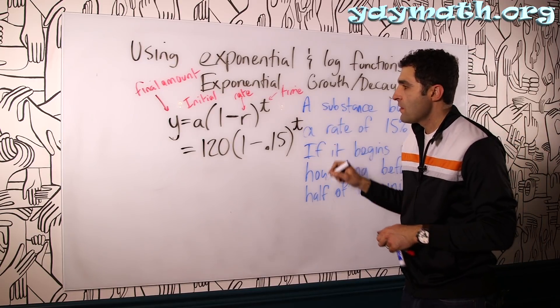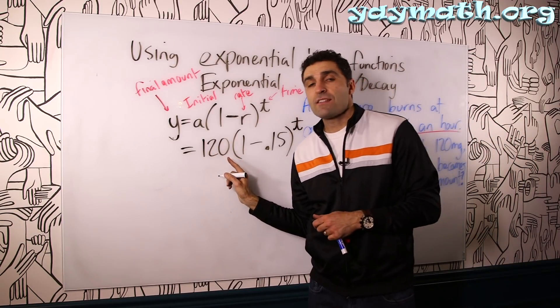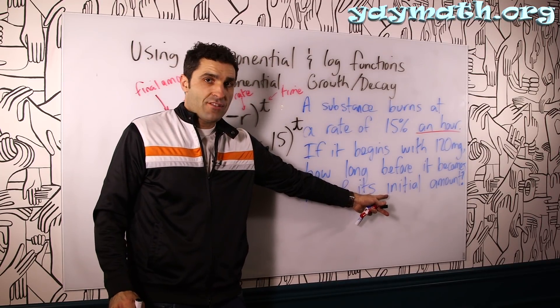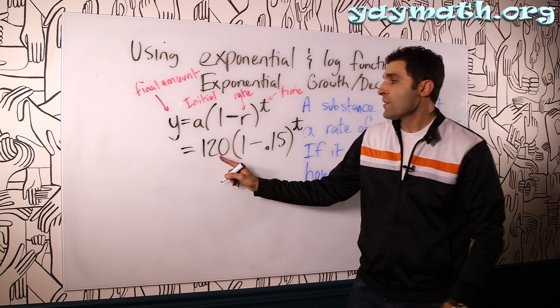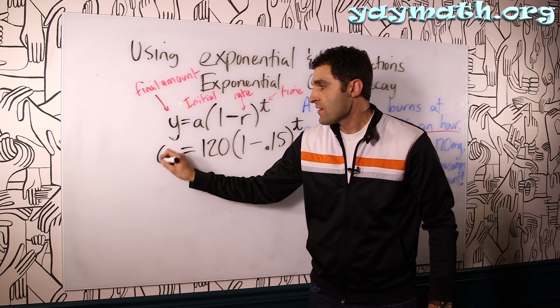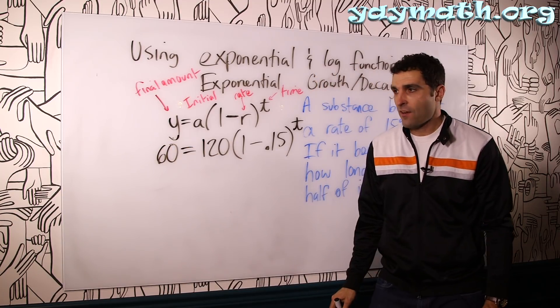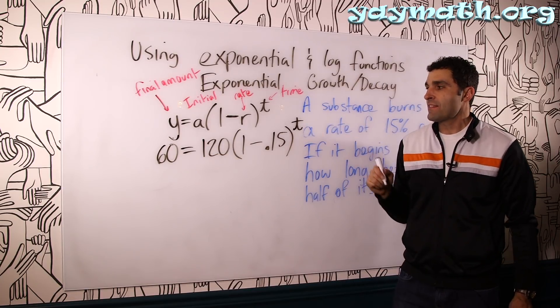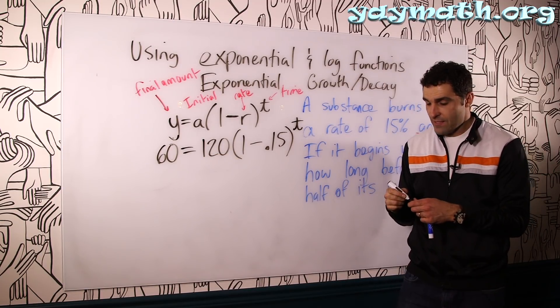So it's actually decaying. It's decreasing in its amount. And we're actually looking for the amount of time it would take, which T we don't know, for the 120 to become half of its initial amount. Half of its initial amount. So that would mean the 120 needs to reduce to 60. And now we have a single variable in there, which is T in this case.